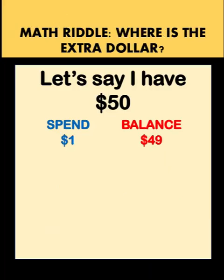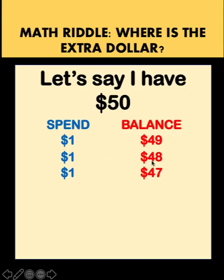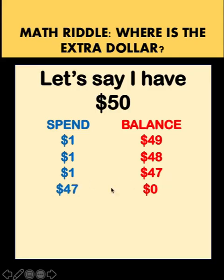Let's say I spent $1, so my balance would be $49. From this $49, I spent another $1, so my balance would be $48. I spent again another $1, and my balance would be $47. And finally, let's say I spent the remaining $47, and so my balance would be $0. If we add the spend column, we get $50, which is consistent with the amount I started with.